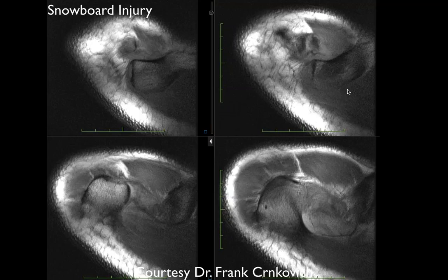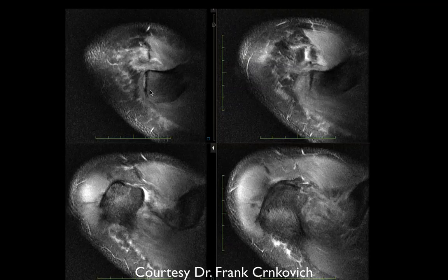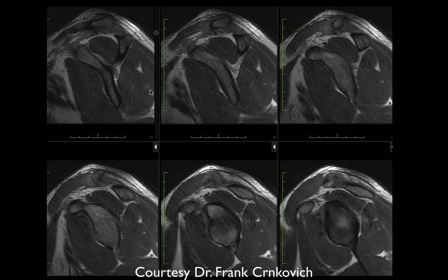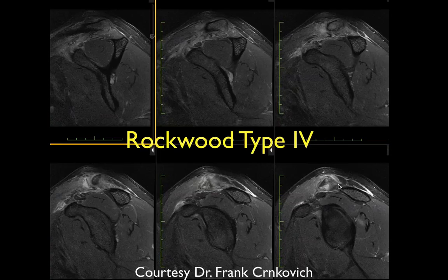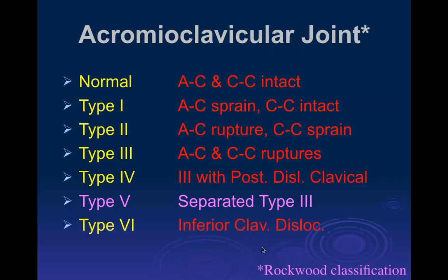In this snowboard injury case, multiple axial T1 images show the clavicle posteriorly and superiorly displaced with respect to the acromion. PD fat-saturated images show edema at the distal clavicle and acromion. The clavicle is both posterior and slightly superior, making this another Type 4 — a posterior dislocation of the distal clavicle with respect to the acromion.